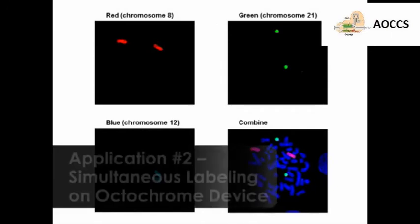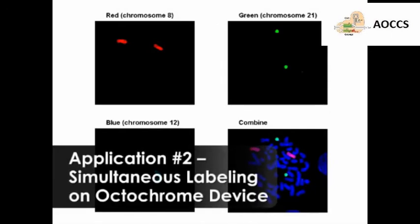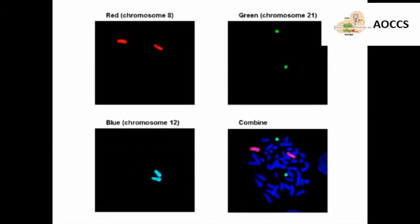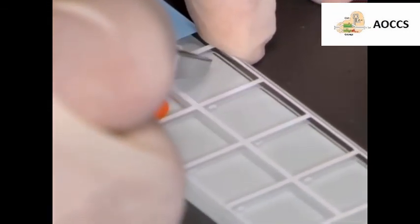Innovative techniques have also been developed to label all chromosomes from a single biological sample. One such method involves the octachrome device, an eight-celled glass slide preloaded with fluorescent probes.